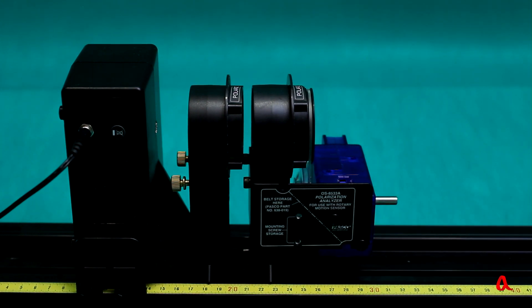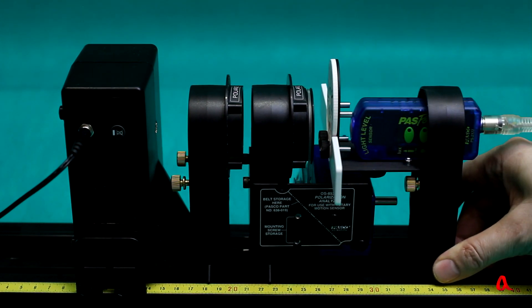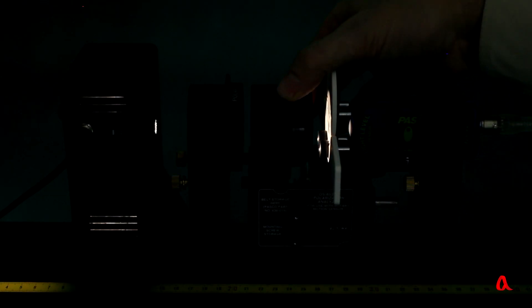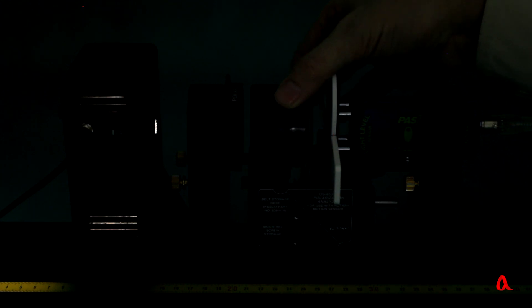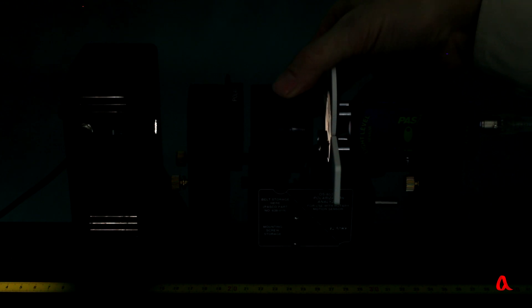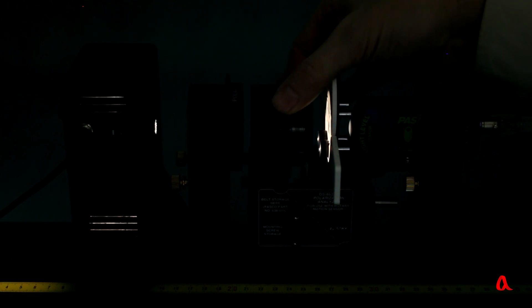And the last in this chain is a light sensor. We will rotate the analyzer and see how the light sensor readings depend on the angle of rotation. And of course the experiment must be done in the dark to eliminate extraneous light.